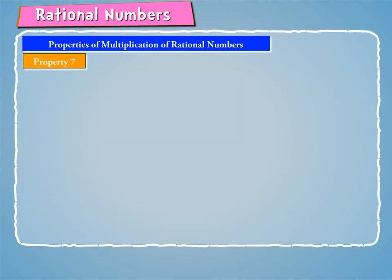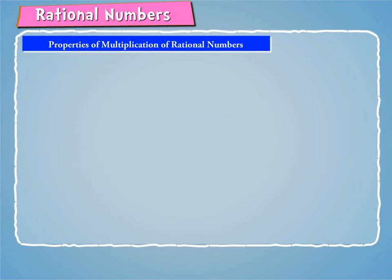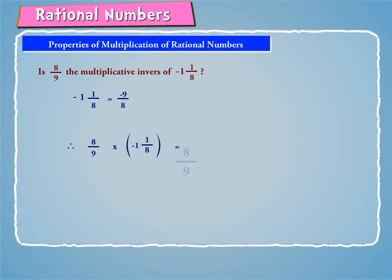Property 7: As we know that minus 8/17 into 17/(minus 8) is equal to 1, so the reciprocal of minus 8/17 is 17/(minus 8). Thus, if A and B are two rational numbers such that A into B equals 1, then each is called the reciprocal of the other. Let us find out whether 8/9 is the multiplicative inverse of minus 1 and 1/8. We know that minus 1 and 1/8 equals minus 9/8. Therefore, 8/9 into minus 9/8 equals minus 1, which is not equal to 1. Therefore, 8/9 is not the multiplicative inverse of minus 11/8.